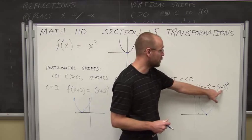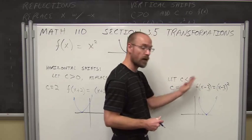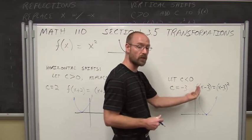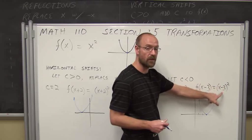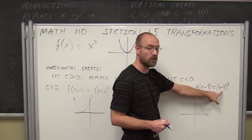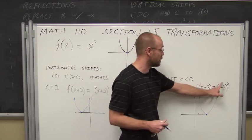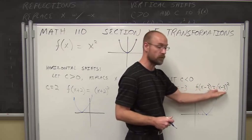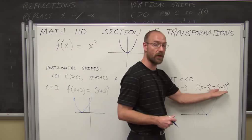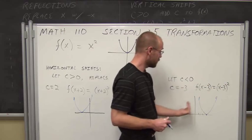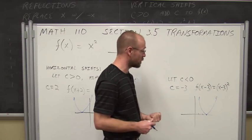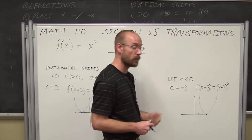What you'll notice when we talk about horizontal shifts is it's always the opposite of the value you see within the parentheses, within the operation of being squared. So we can see that it shifts to the right.